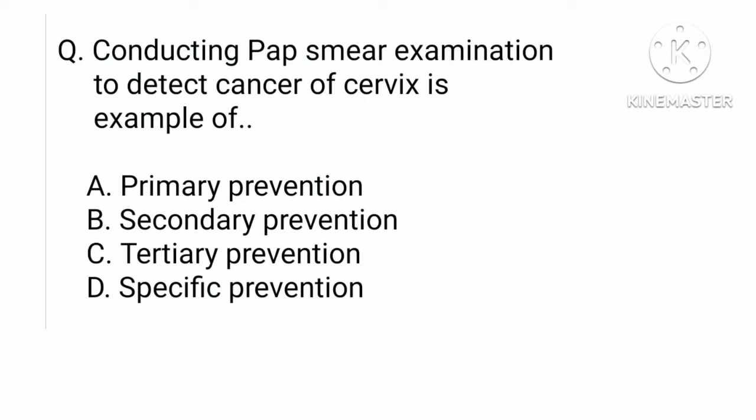Conducting a Pap smear examination to detect cancer of the cervix is an example of: a) primary prevention, b) secondary prevention, c) tertiary prevention, or d) specific prevention. The correct answer is b) secondary prevention. Screening activities like Pap smear, breast self-examination, and testicular self-examination are secondary prevention because they recognize an already-started process of pathogenesis, although health teaching regarding screening activities is part of primary prevention.